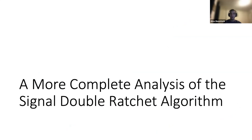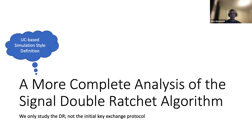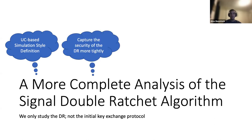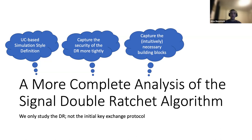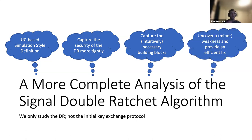So what do we do in our paper? Well, first of all, we only study the core double ratchet algorithm and not actually the initial key exchange protocol of Signal. We provide a UC-based simulation-style definition for the double ratchet. We capture the security of the double ratchet more tightly than previous works that study the double ratchet. And along the way, we also capture the intuitively necessary building blocks for the security of the double ratchet. Finally, we uncover a minor weakness of the double ratchet and provide a very efficient fix. Please come to the talk if you want to learn more.